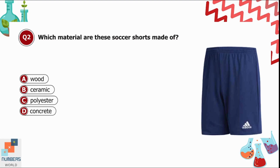Question 2: Which material are those soccer shorts made of? Option A is wood — of course not. Option B is ceramic. Option C is polyester. Option D is concrete. Concrete is used to make walls and floors, ceramic for cups or plates, and wood is a very hard material. Polyester is the flexible material used to make soccer shorts, so option C is correct.